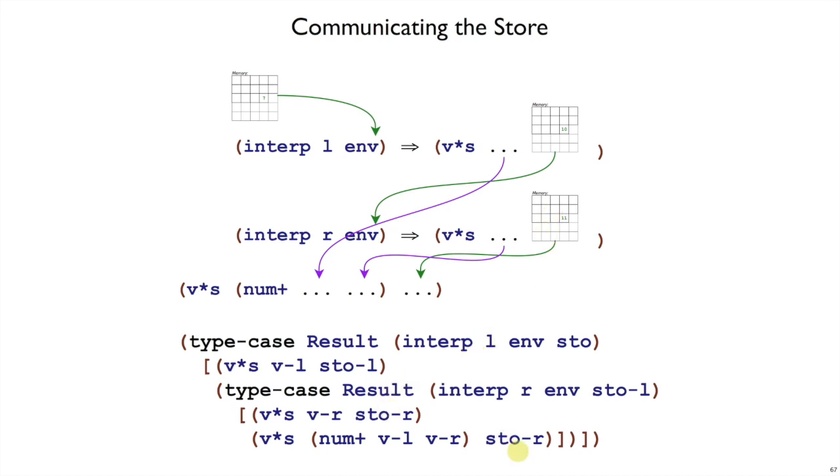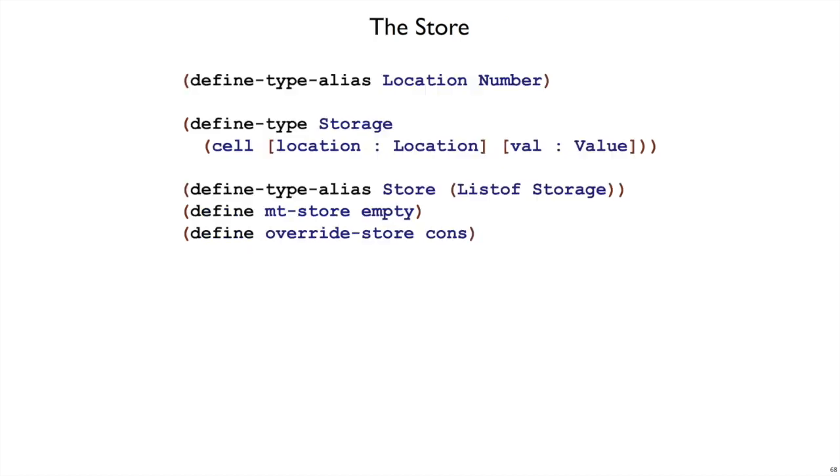Stow R is the one that we're going to return along with the sum of the numbers VL and VR. Those were the two values that we got back from the recursive calls to interp. So our single line before turned into these five lines in order to thread through the store through the interpret and the R calls.